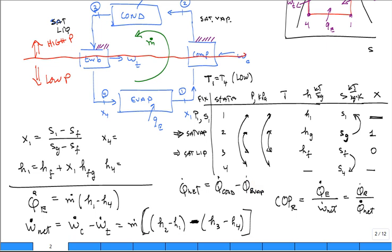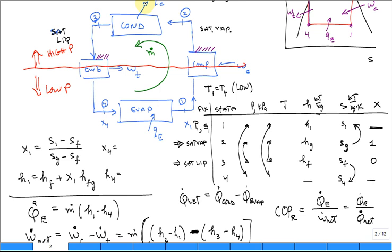This is what's being rejected in that condenser. This is what's being picked up in the evaporator. Q dot C for rate of heat rejection in the condenser. Q dot E rate of heat addition in the evaporator. So that's what Q dot net is.